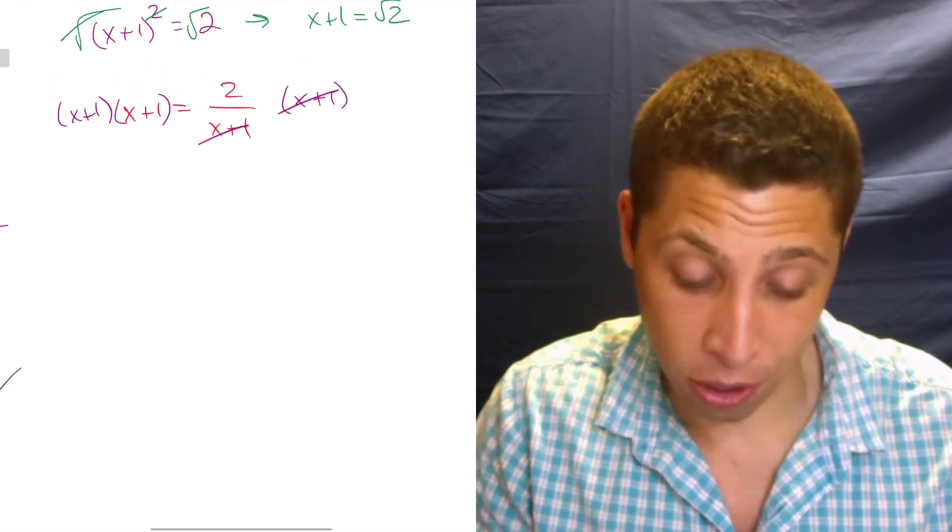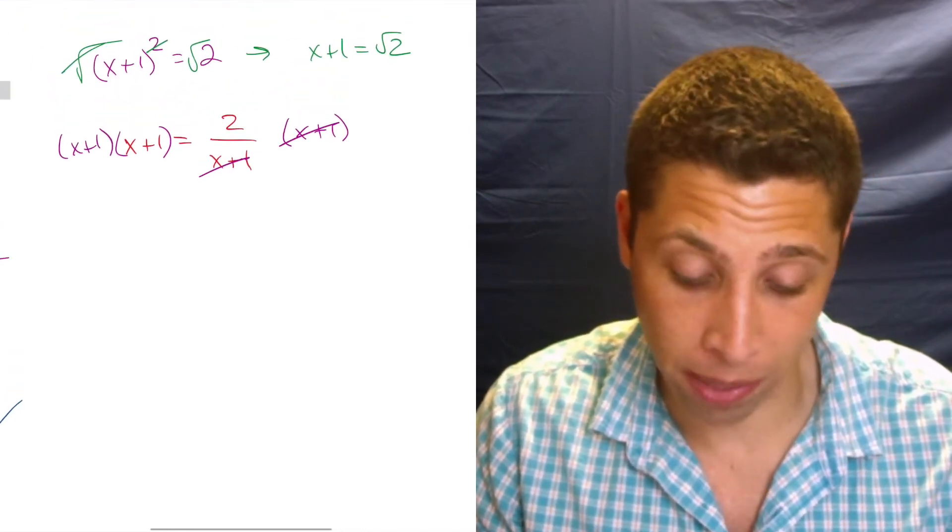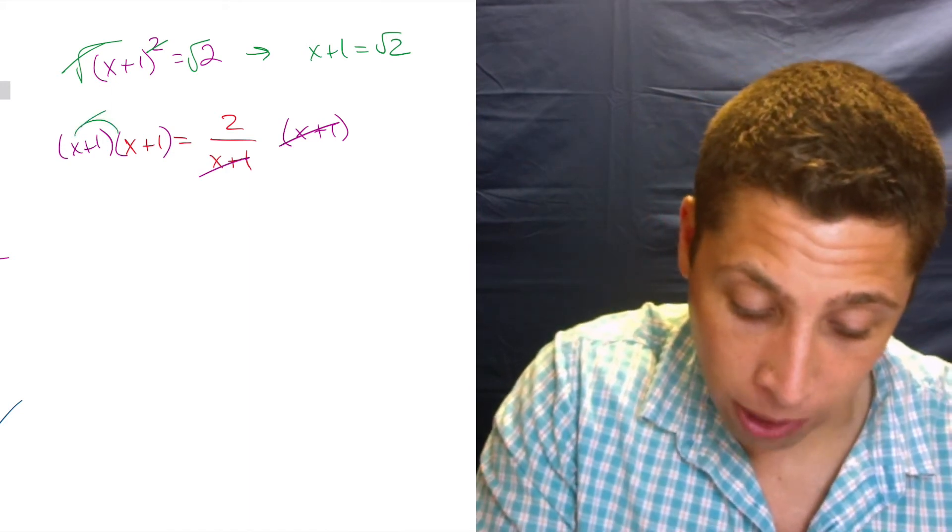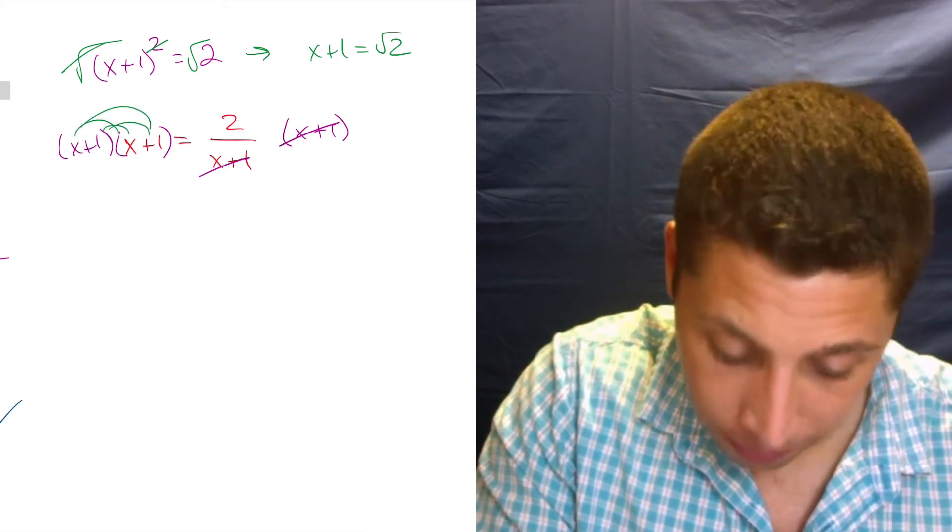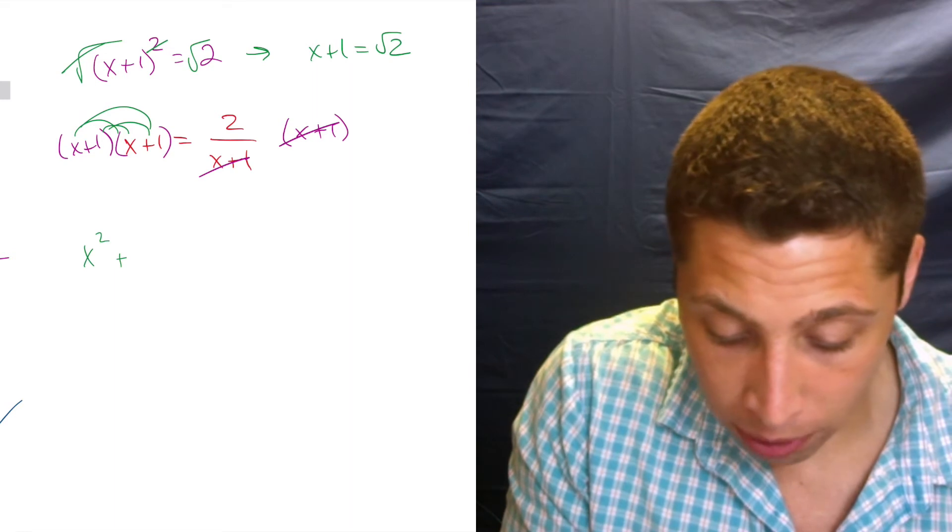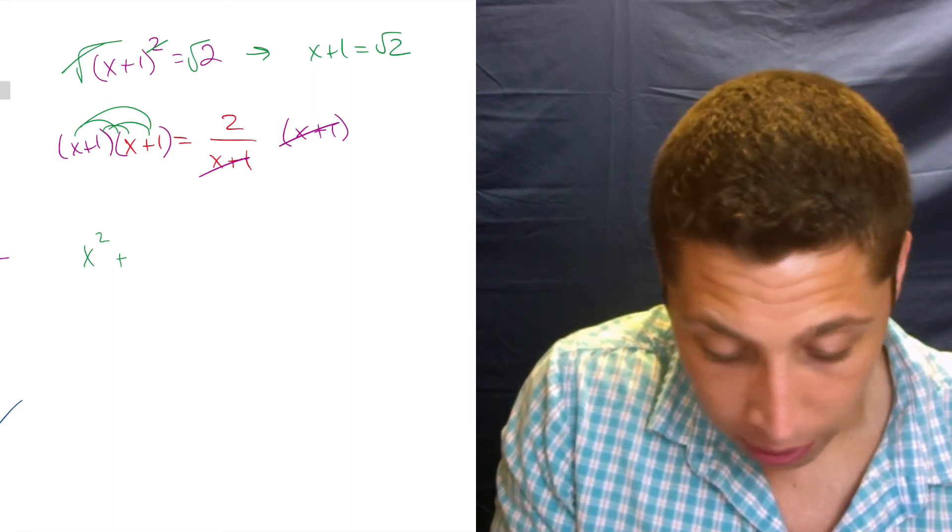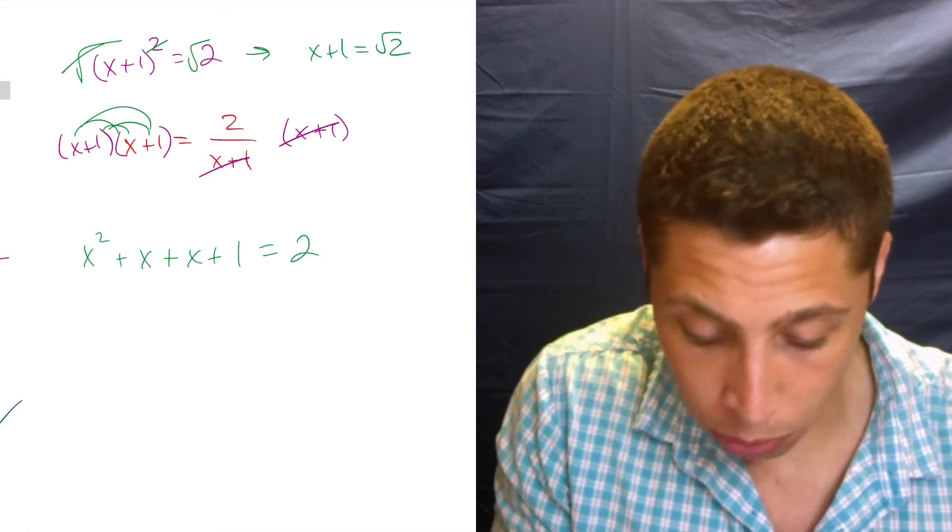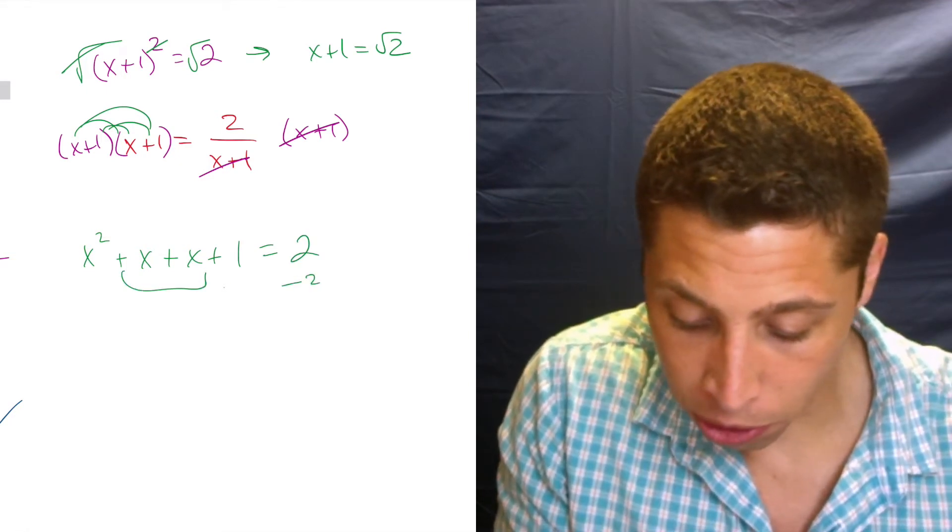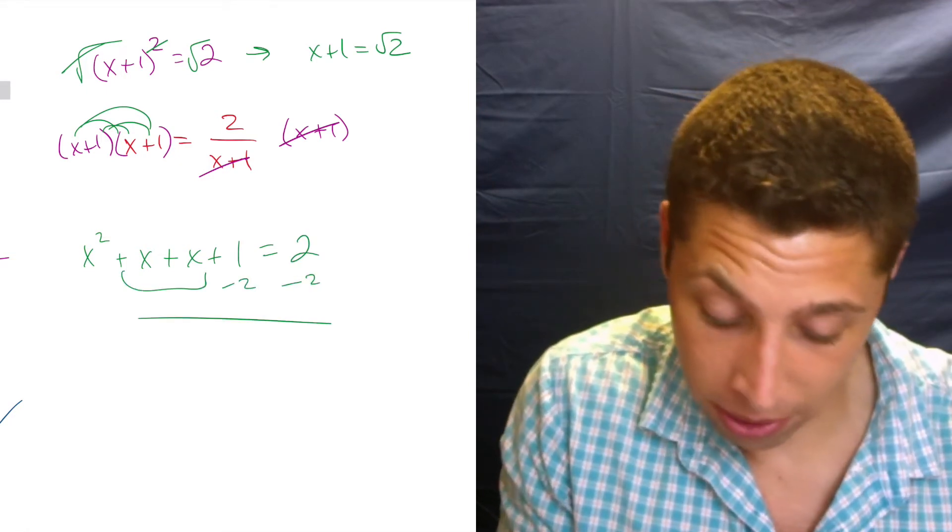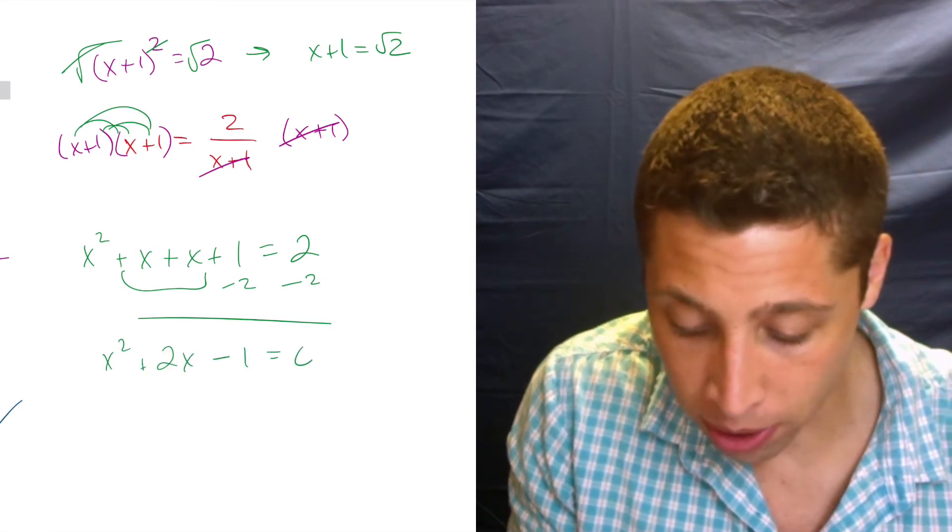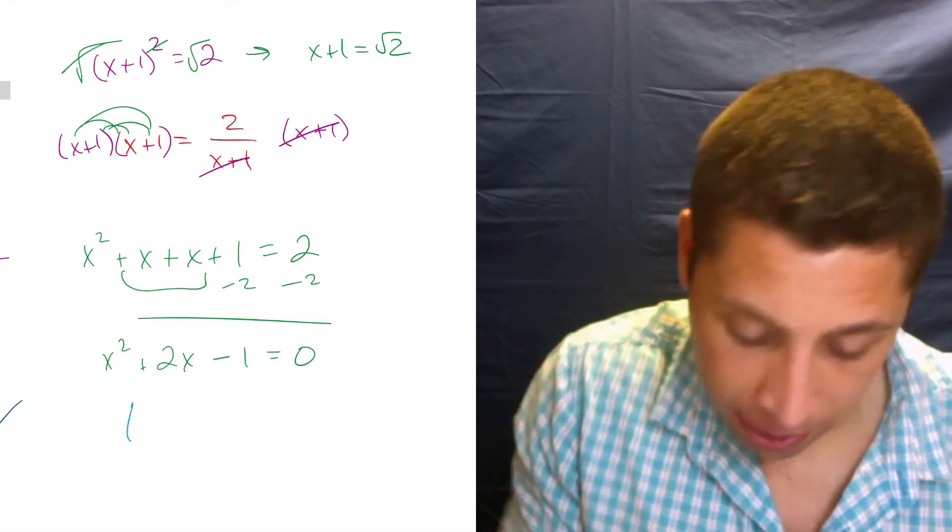But you're probably not going to do that because if you didn't see the shortcut from the get-go, you're probably stuck doing it the long way, which means you're foiling. So you're getting X squared plus X plus X plus 1 is equal to 2. You're combining like terms. You're subtracting 2, hopefully, from both sides. And you're getting X squared plus 2X minus 1 is equal to 0. And that's going to let you factor.